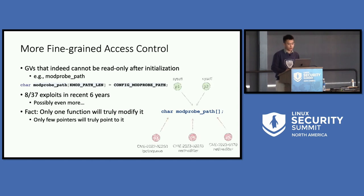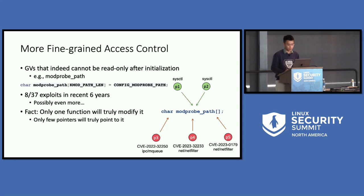There are also some global variables that could indeed be changed after kernel initialization. For example, modprobe_path, which is a highly corrupted global variable in many recent kernel exploits. We cannot put it into the read-only section even after initialization because it could be changed if we turn on the sysctl config. But the truth is that only a few pointers in one single function of the sysctl module in the Linux kernel will modify it. All of the exploits — for example, those using IPC or LED filters — corrupt it through dangling pointers in unrelated modules. So if we can identify all the legal pointers that point to modprobe_path, we can figure out the illegal pointers and protect it through pointer-level access control.